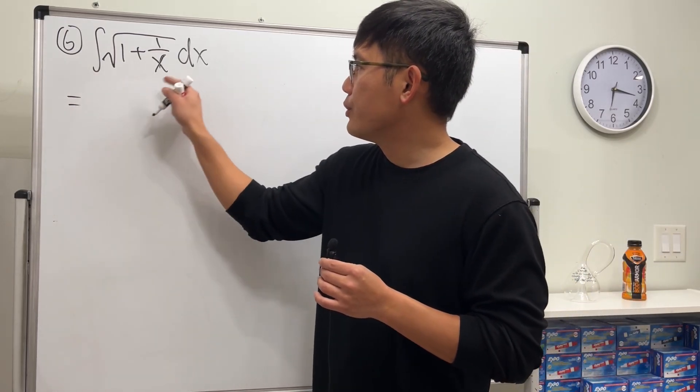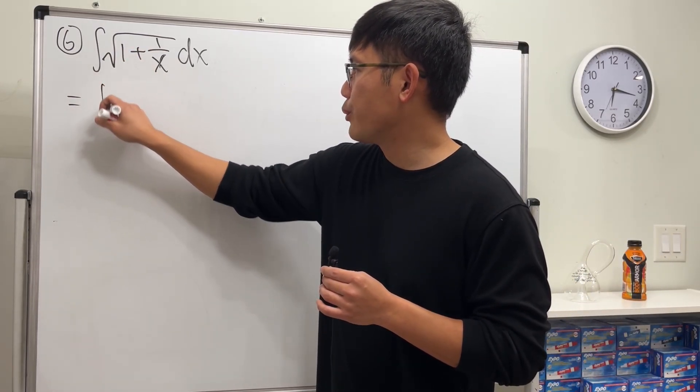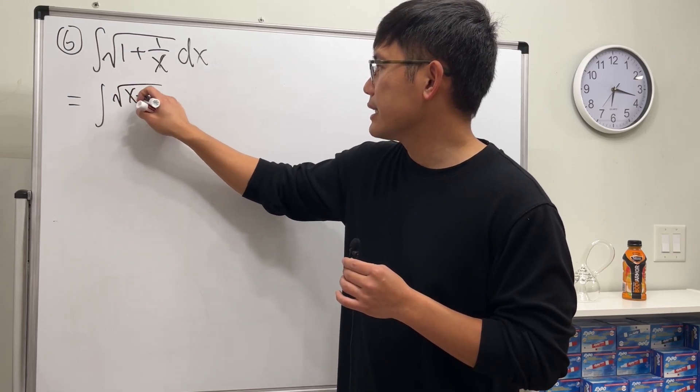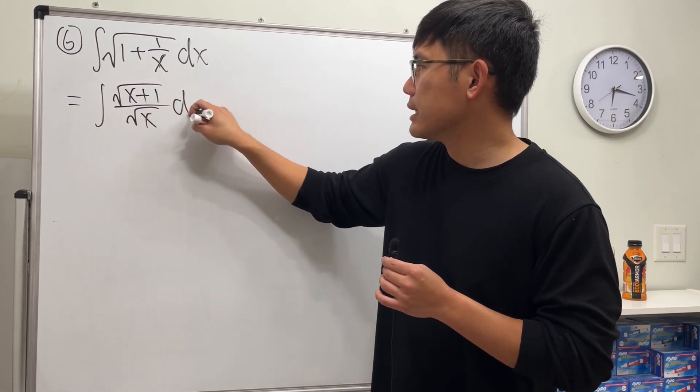So for this, I'm going to combine the fractions inside and then break the square root. So square root of x plus 1 over square root of x dx.